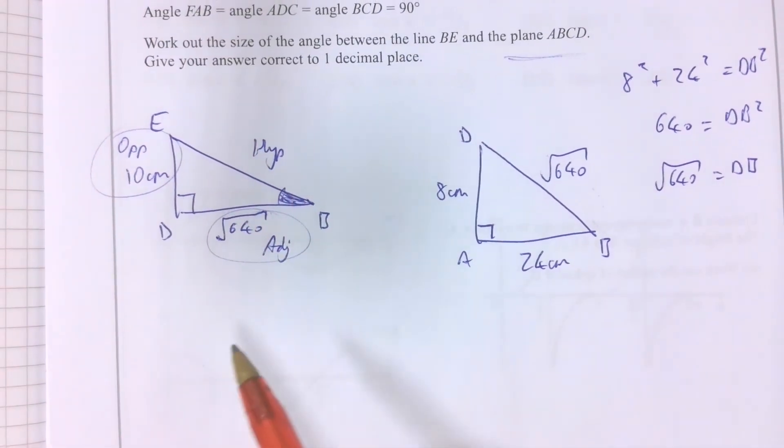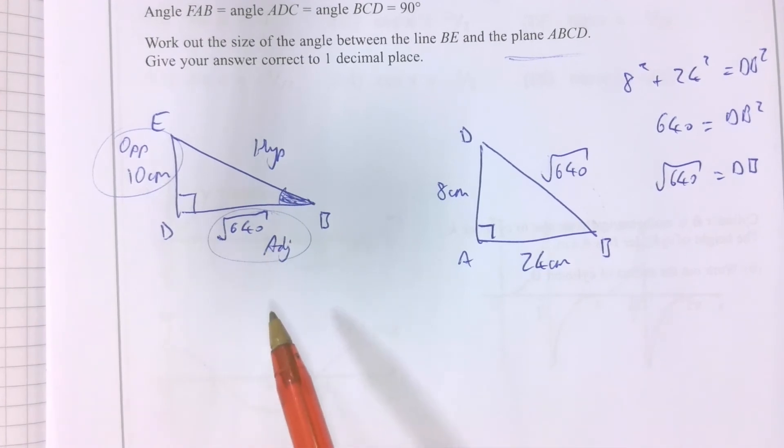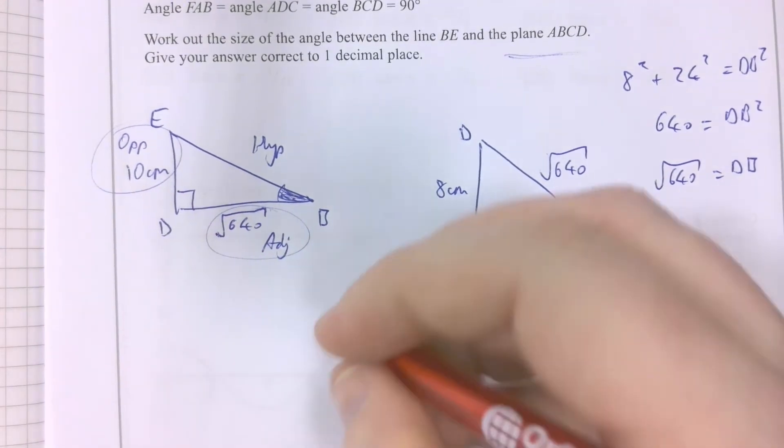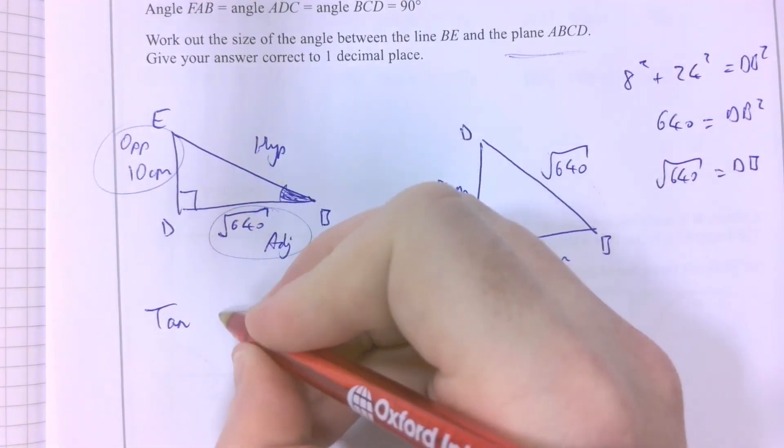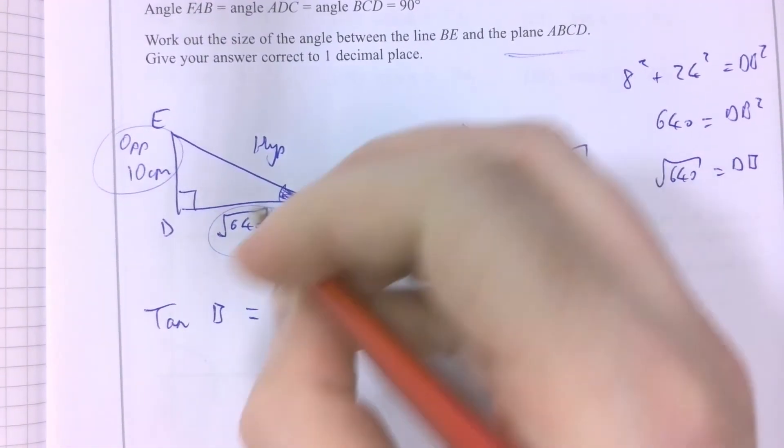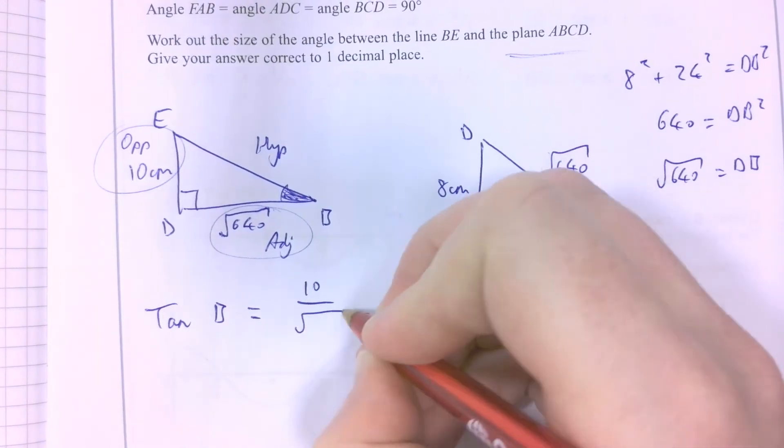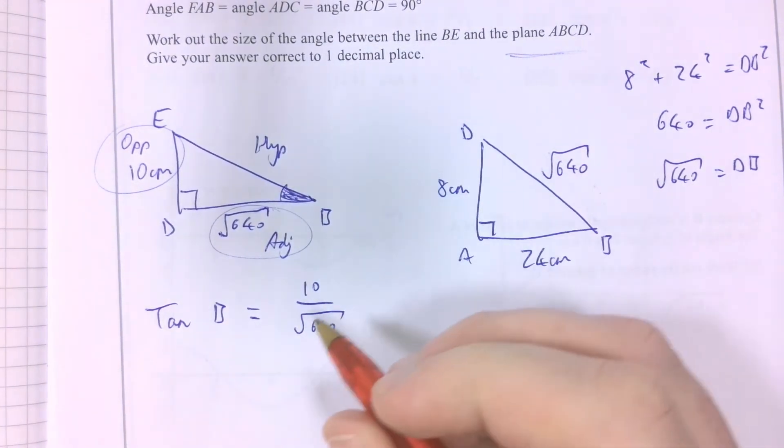Now, you might write out SOH CAH TOA and underline the information that you have. You can work out that it is indeed tan of my angle. Let's call that letter B. Equals opposite over adjacent.